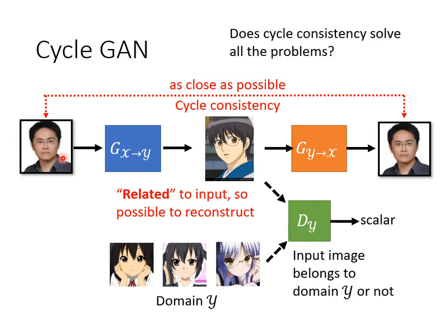But there is a problem. We can only guarantee that the input and output have some sort of relationship. What if this relationship is not exactly what we want? Maybe the second generator will learn some weird conversion. For example, if the input to the first generator is a man with glasses, and the first generator learned to wipe off the glasses and turn it into a mole, then the second generator might learn to turn a mole into glasses. This can still satisfy cycle consistency. As a more extreme example, if the first generator learned to horizontally flip the picture, the second generator only needs to learn to flip it again. So cycle consistency alone seems not enough.